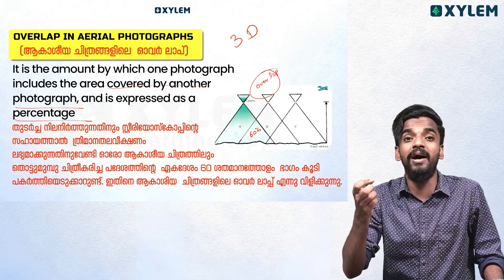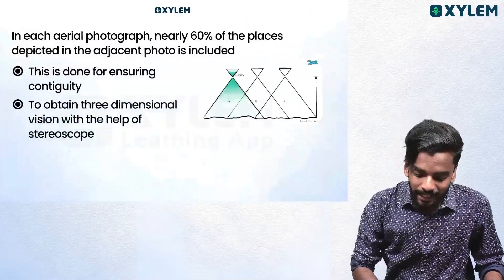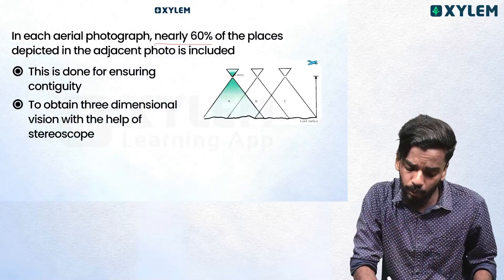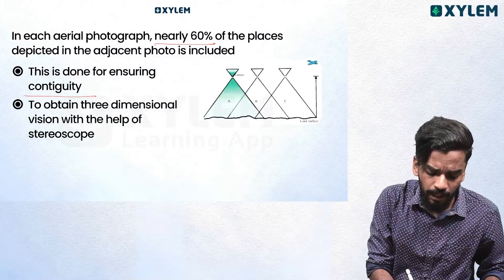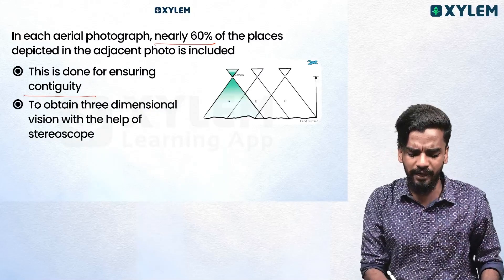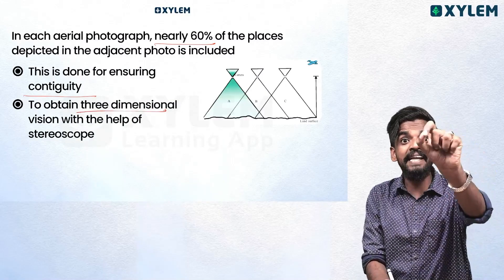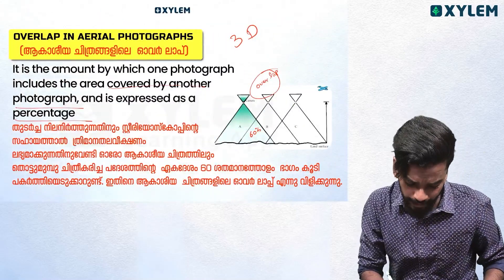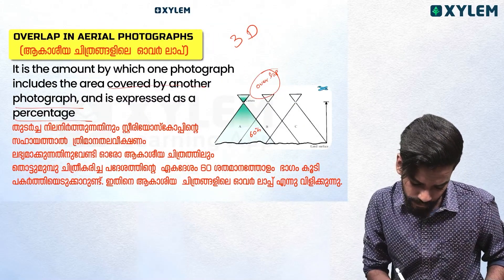We have a 3D or lot of views. From the overlap, we have made a lot of pictures on a typical video — continuity. Three-dimensional vision. We have a stereoscope and a stereo scope.